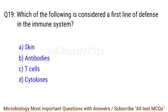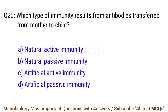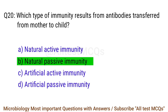Q19. Which of the following is considered a first line of defence in the immune system? The right answer is option A: Skin. Q20. Which type of immunity results from antibodies transferred from mother to child? The right answer is option B: Natural passive immunity.